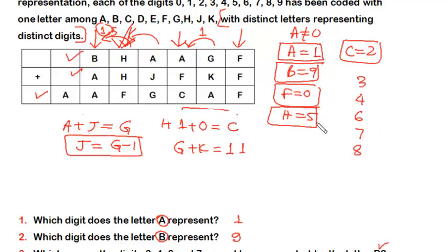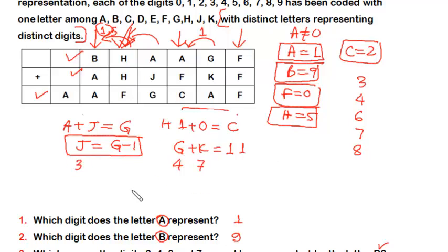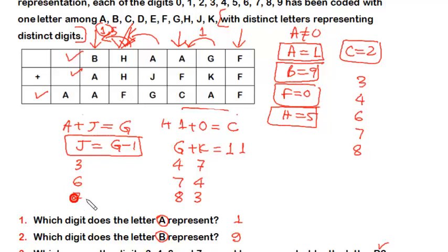We enumerate cases for G plus K equals eleven using remaining digits. If G equals three, K equals eight, then J equals two — not possible, since two is already assigned to C. If G equals four, K equals seven, then J equals three — valid. If G equals six, K equals five — not possible, five is taken by H. If G equals seven, K equals four, J equals six — valid. If G equals eight, K equals three, J equals seven — valid. So there are three valid cases.